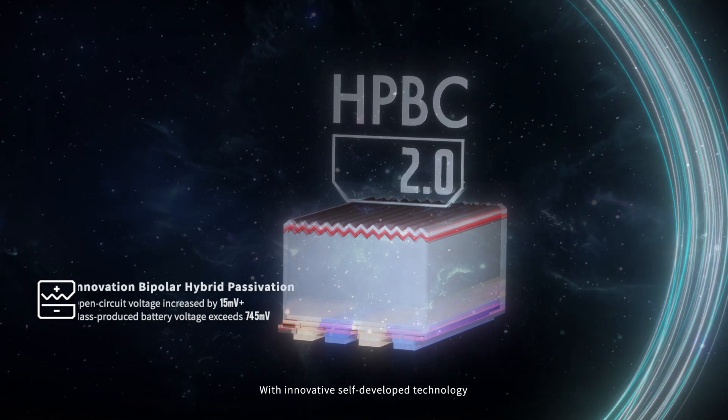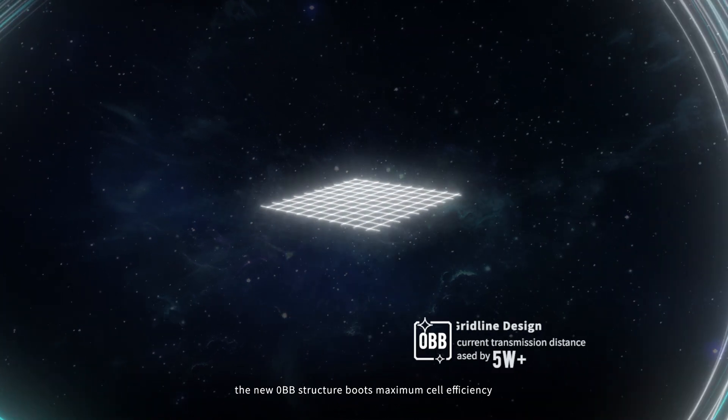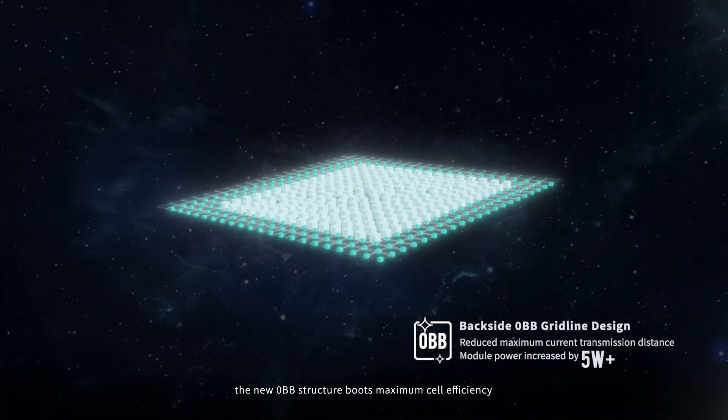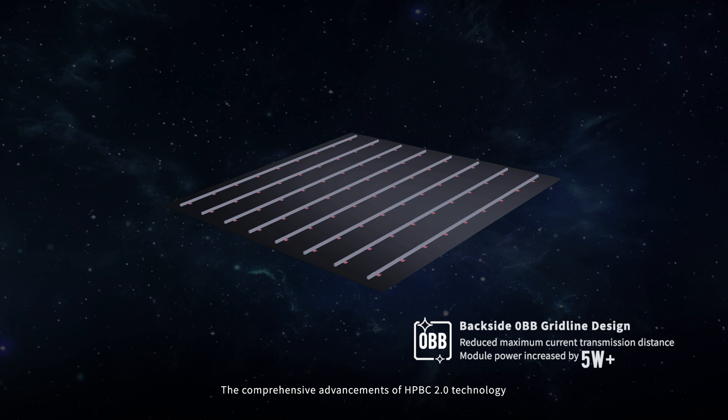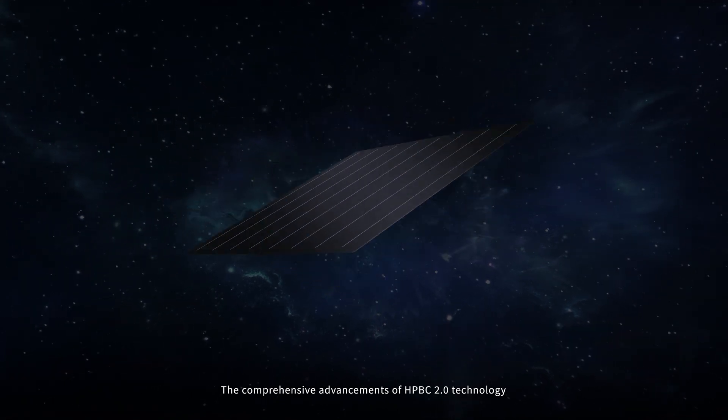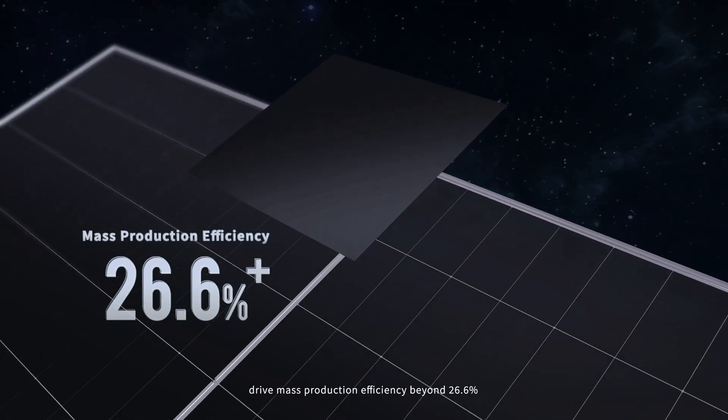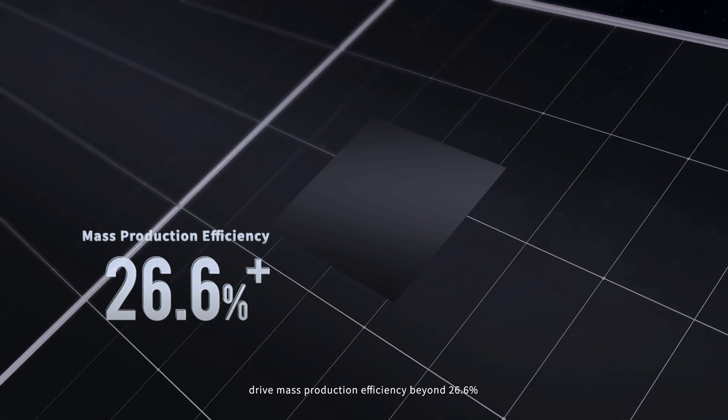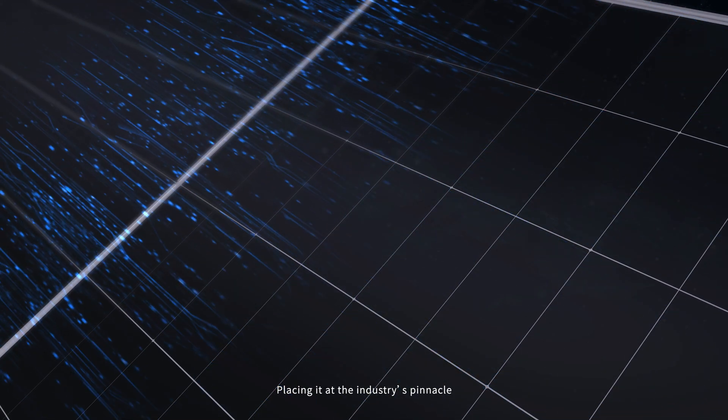With innovative self-developed technology, the new 0BB structure boosts maximum cell efficiency. The comprehensive advancements of HPBC 2.0 technology drive mass production efficiency beyond 26.6%, placing it at the industry's pinnacle.